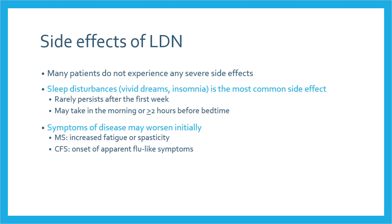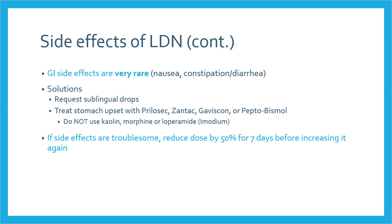LDN may also initially worsen symptoms of specific diseases. For multiple sclerosis, this may present as increased fatigue or spasticity. For chronic fatigue syndrome, an onset of apparent flu-like symptoms may occur. GI side effects such as nausea, constipation, or diarrhea are extremely rare. However, if they do occur, patients may request sublingual drops, as these transfer directly into the bloodstream and bypass the GI tract. Stomach upset may also be treated with over-the-counter products such as Prilosec, Zantac, Gaviscon, or Pepto-Bismol.